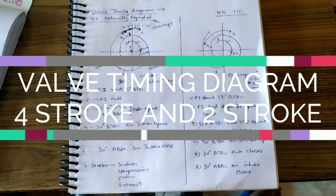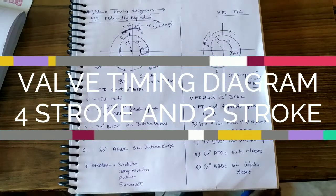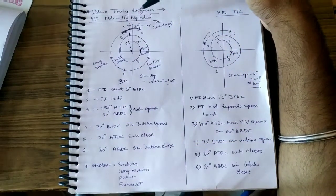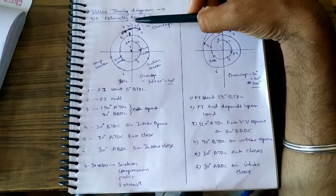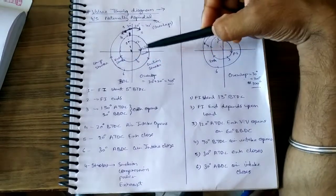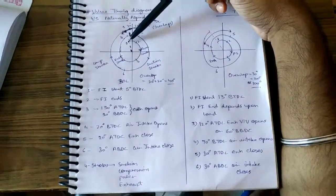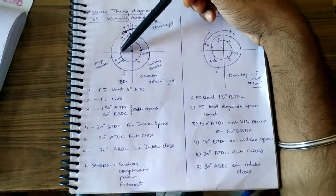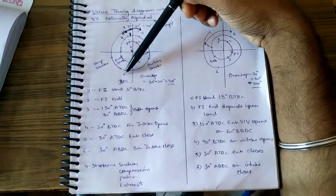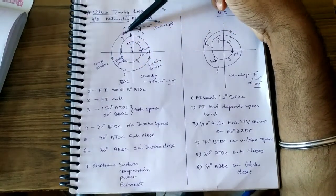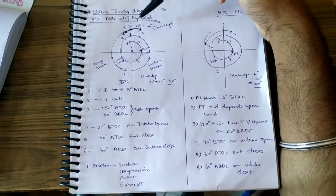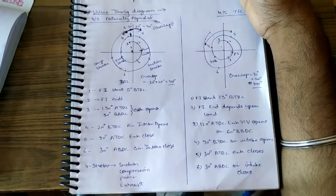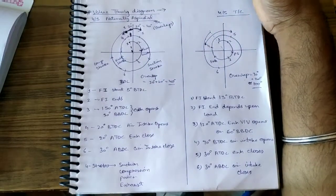Hello friends! Today's topic is the valve timing diagram, and you are seeing this diagram is for the four-stroke naturally aspirated engine. To make this diagram, you have to first make two perpendicular lines and then draw a circle, starting from one point and following the path to complete the circle back to the same point. Now you can see this is the TDC position and this is the BDC position.